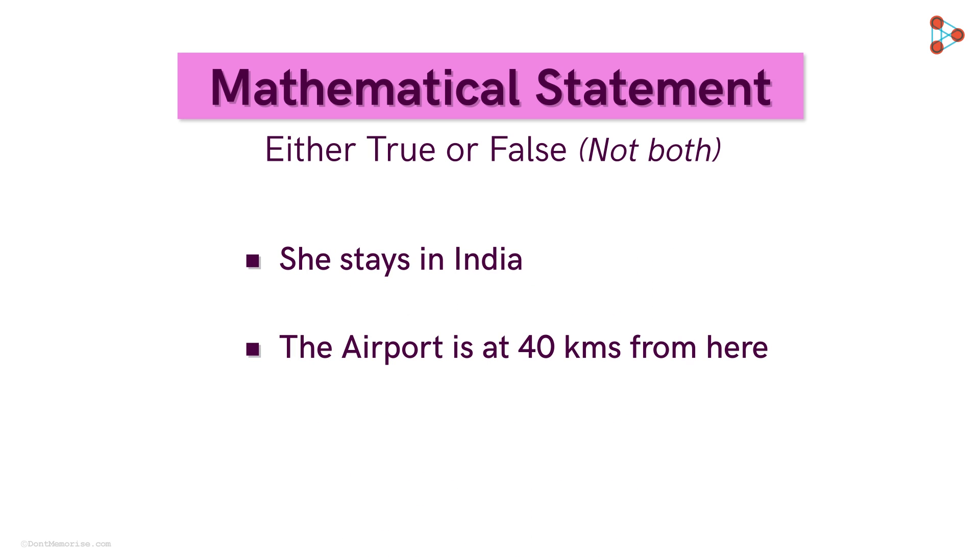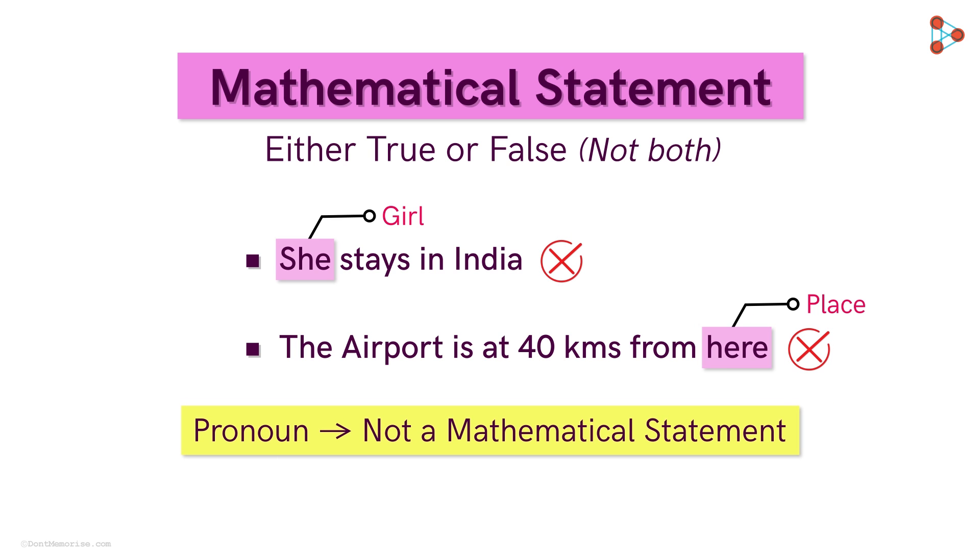What about these two statements? Here, she could mean any girl and here could be any place. She and here are pronouns and statements involving pronouns cannot be considered as mathematical statements.